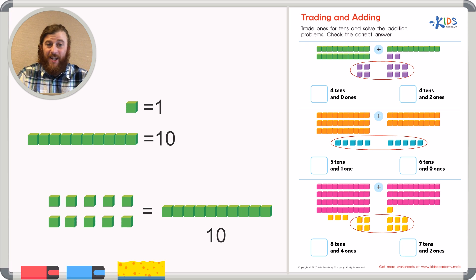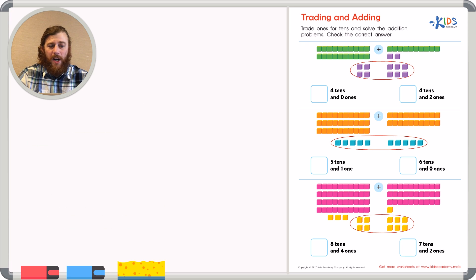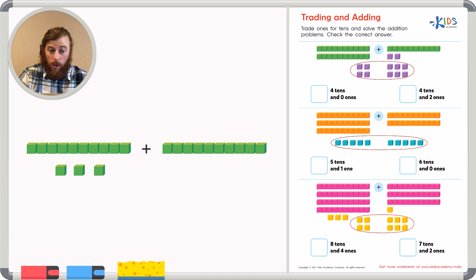The trading and adding strategy is really cool. For example, if I wanted to add one long and three cubes plus one long and seven cubes, I could first combine all my cubes or ones. I know that three plus seven equals 10.